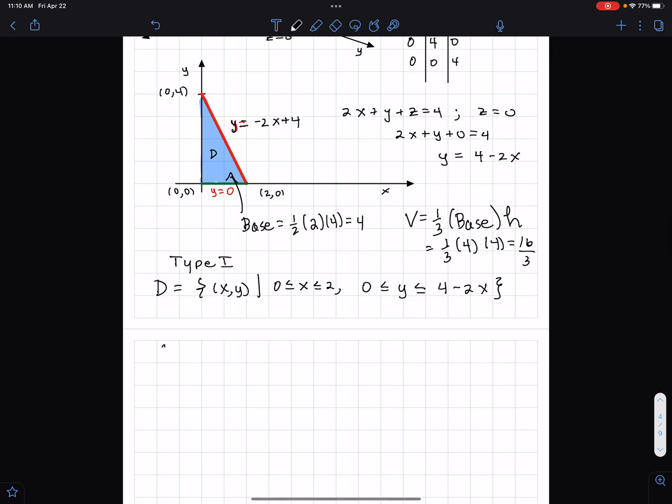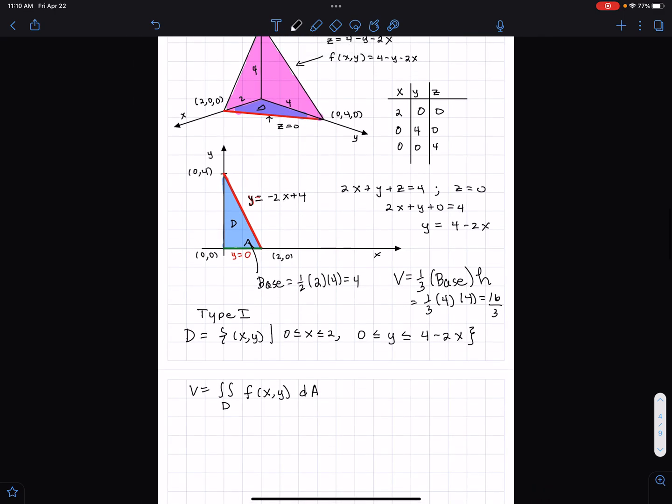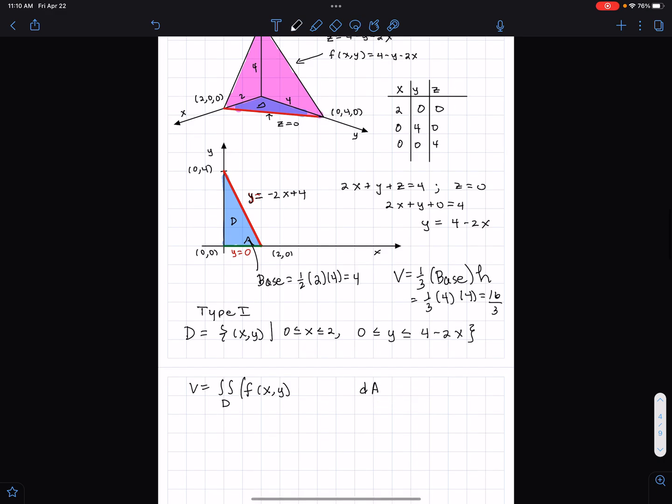And so then our integral, well, our volume is the integral over the region D of the top function F. A more general formula, really, though, is it's the top, F, or the function above, minus, say, G, just made up that whatever letter might work best for your function. But that's the one that comes below.